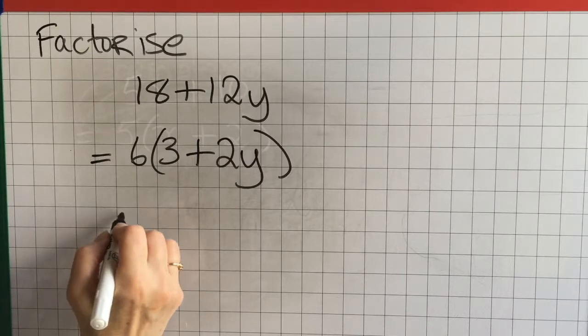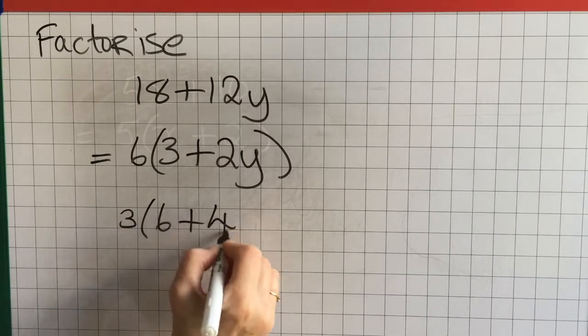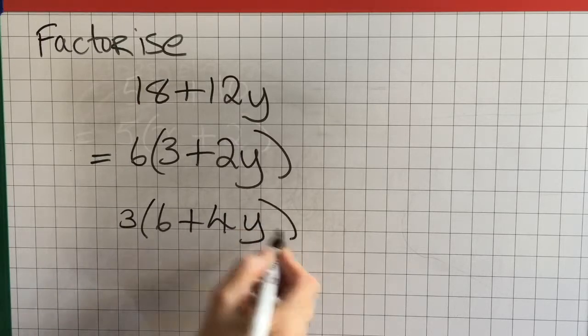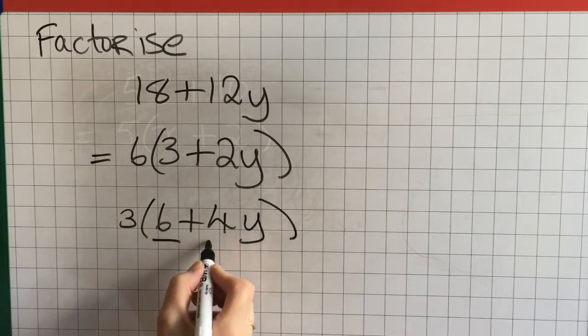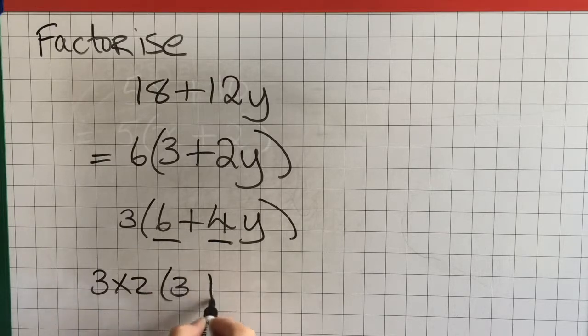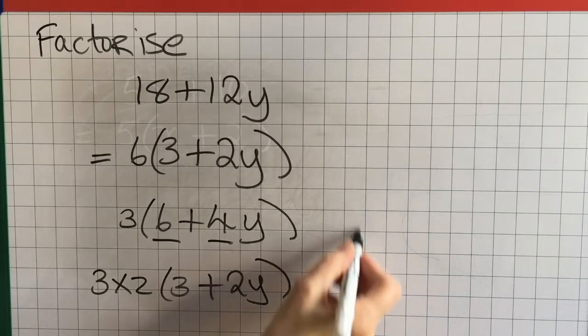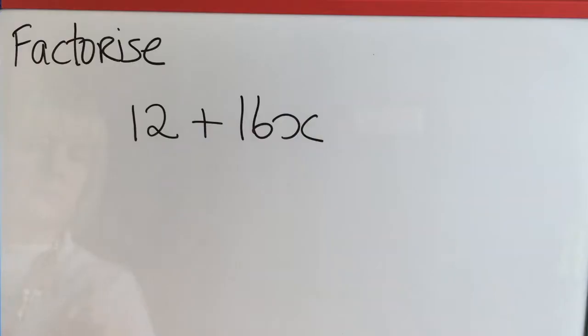Now what would happen if I didn't see the highest common factor and took out 3? Well I'd look inside the brackets again and see that there's another 2 that can be taken out. And then the 3 times 2 is 6 and I'm back to the original answer.